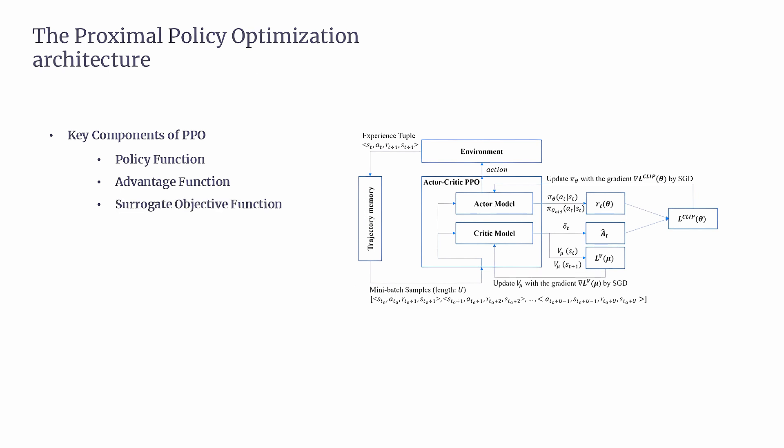Third, the Surrogate Objective Function. PPO doesn't optimize the actual objective directly. Instead, it uses a surrogate objective, which is an approximation that's easier to work with. This lets us perform multiple updates efficiently on the same batch of data.